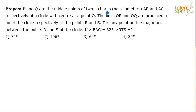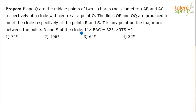P and Q are the middle points of two chords, which are not the diameters — AB and AC respectively — of a circle with center at point O. The lines OP and OQ are produced to meet the circle at points R and S. T is any point on the major arc between points R and S. If angle BAC is equal to 32 degrees, what is angle RTS?